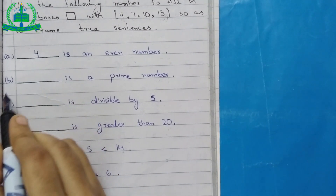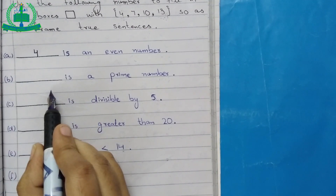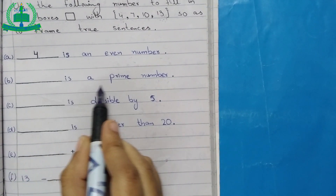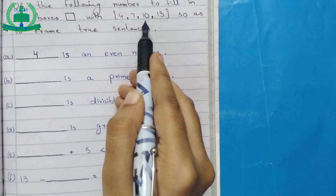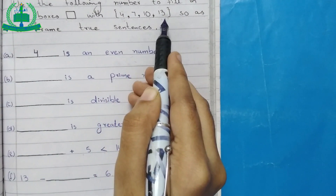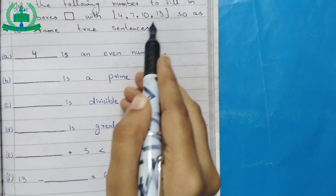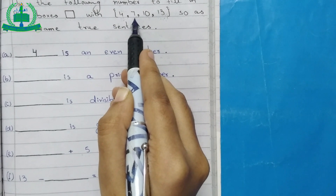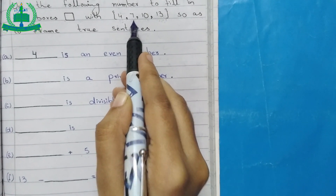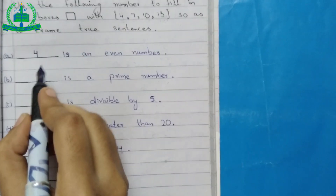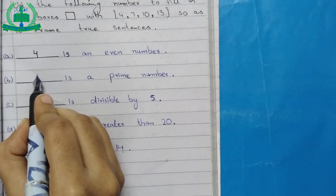B: A dash is a prime number. From the options 4, 7, 10, 13 — 7 is a prime number. It is a true sentence. So we write 7.